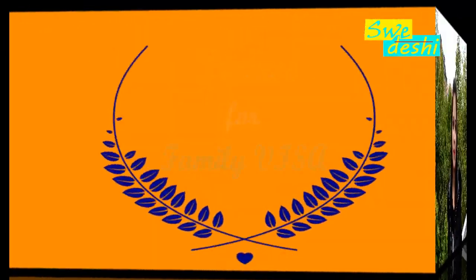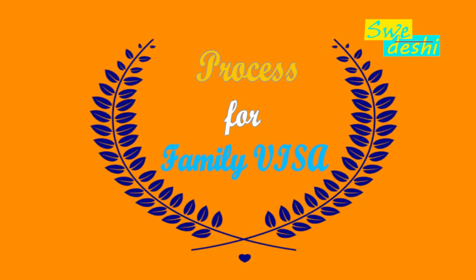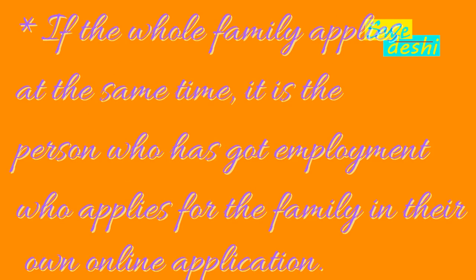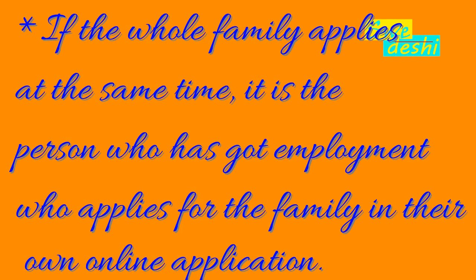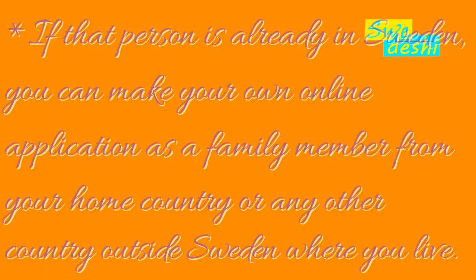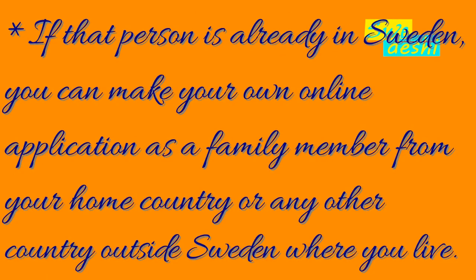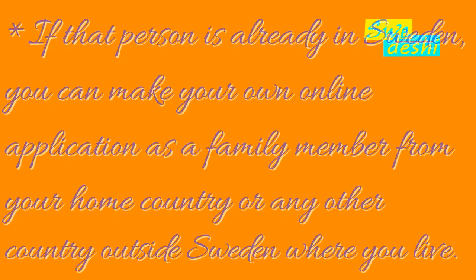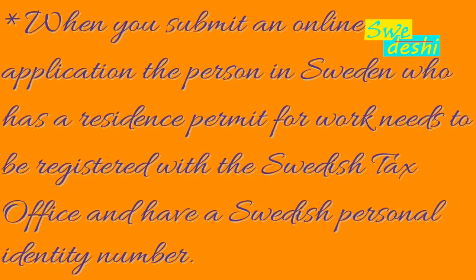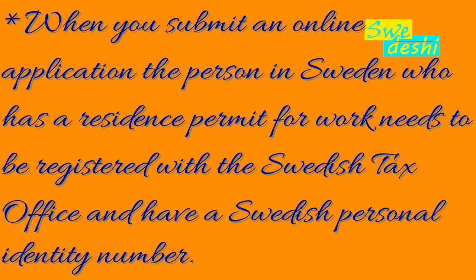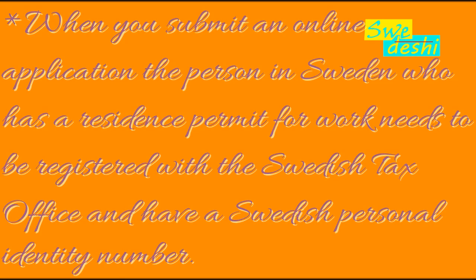After documentation, let's look at the process of how you can apply for a family visa. The whole family applies at the same time — the person who has got employment applies for the family in their own online application. If that person is already in Sweden, you can make your own online application as a family member from your home country or any other country outside Sweden where you live. When you submit an online application, the person in Sweden who has a residence permit for work needs to be registered with the Swedish tax office and have a Swedish personal identity number.